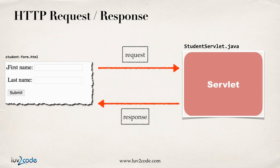We'll start off with student-form.html — that's going to be our HTML form. We're going to gather the student's first name and last name. They'll hit the submit button, the request will go across to our servlet, StudentServlet.java. Our servlet will process the request and then send back a response. That's the basic idea of having a servlet read form data.